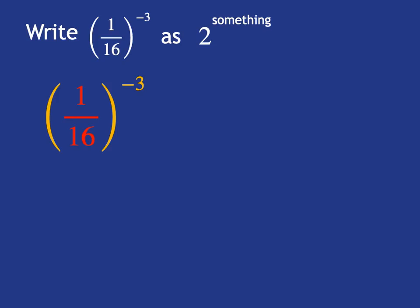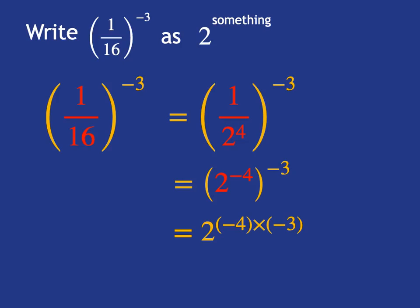So the first thing we hopefully recognize is 16 can just be rewritten as 2 to the power of 4. So where there was a 16, we'll put a 2 to the power of 4. Now we know 1 over 2 to the power of 4 is just the same as 2 to the negative 4, and we can apply our exponential rule, which says then that we have 2 to the negative 4 times negative 3.